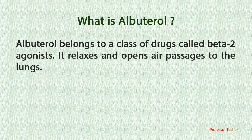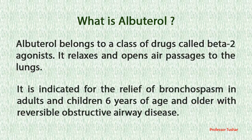What is albuterol? Albuterol belongs to a class of drugs called beta-2 agonists. It relaxes and opens air passages to the lungs. It is indicated for the relief of bronchospasm in adults and children 6 years of age and older with reversible obstructive airway disease.